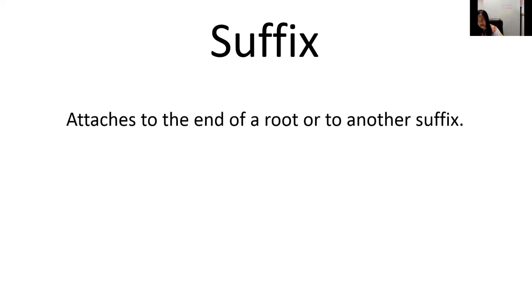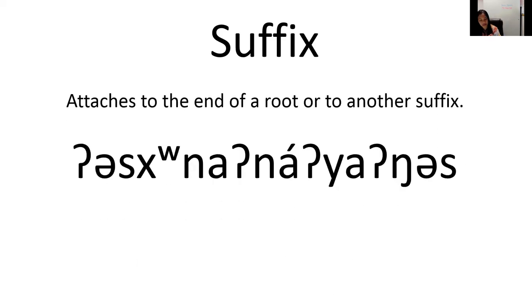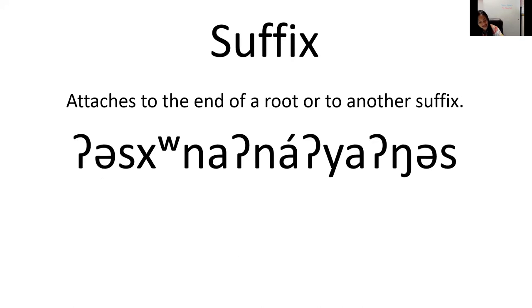A suffix attaches to the end of a root or to another suffix. The word for 'smiling' has two suffixes — the hooked N in the middle, which means middle voice adding meaning like 'do some,' and the 'us' suffix meaning face.